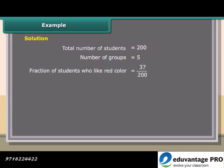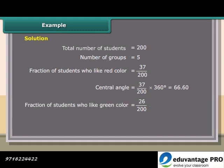Fraction of students who like red color is equal to 37 upon 200. Central angle is equal to 37 upon 200 times 360 degrees, which is equal to 66.60. Fraction of students who like green color is equal to 26 upon 200. Central angle is equal to 26 upon 200 times 360 degrees, which equals 46.80.